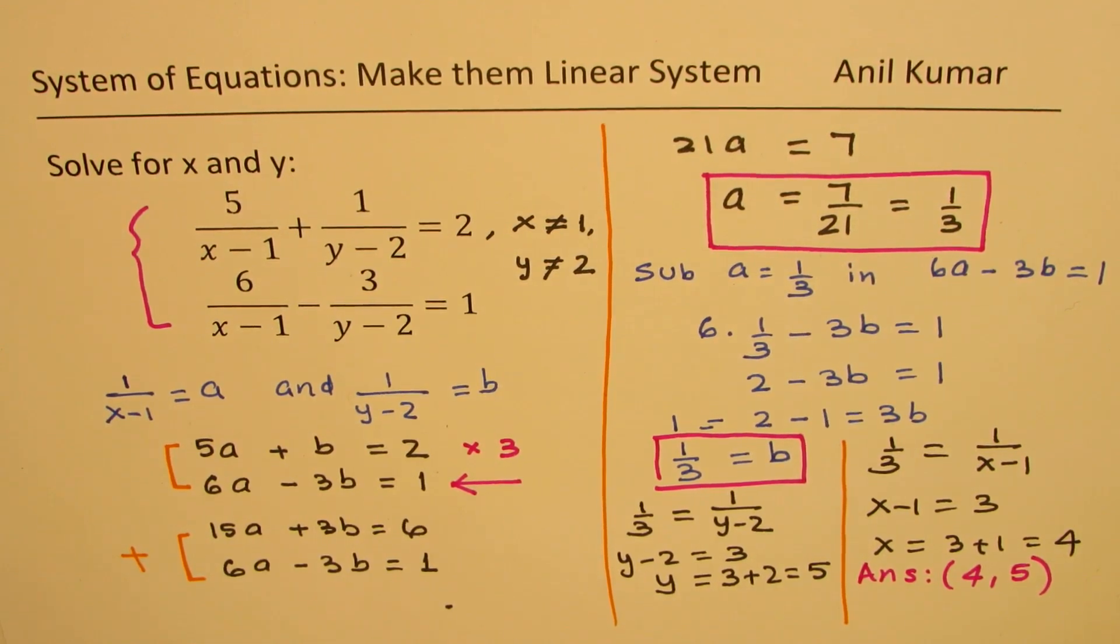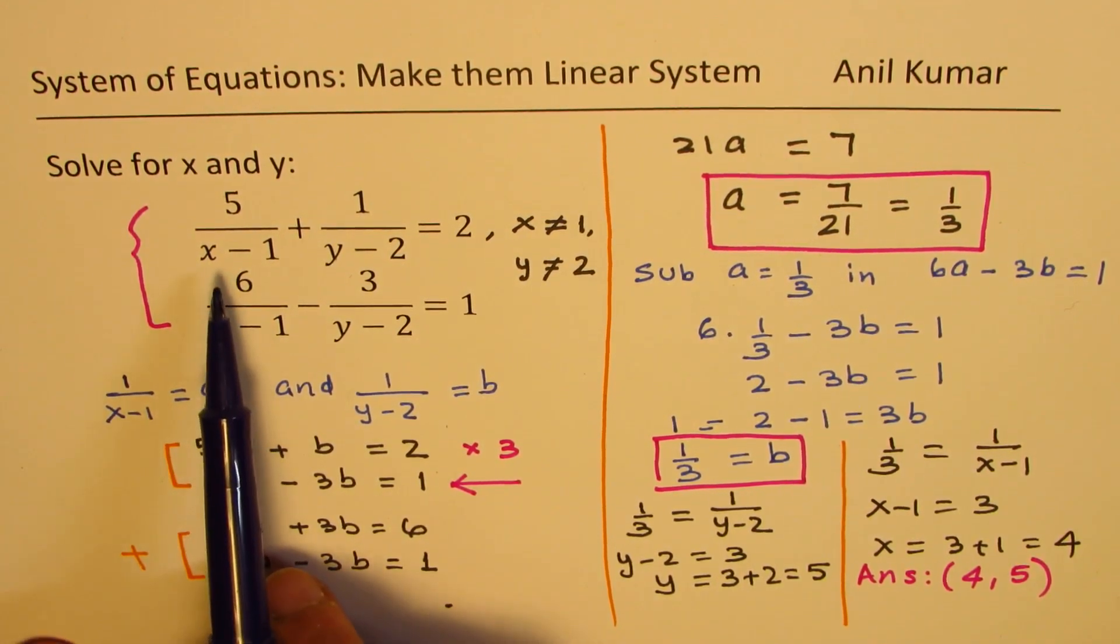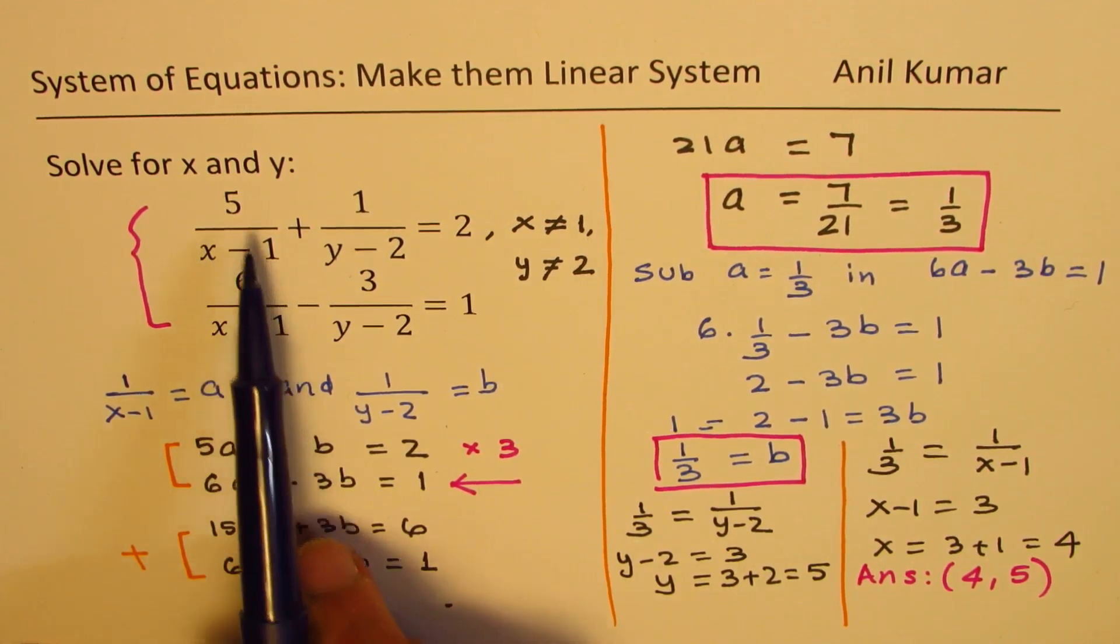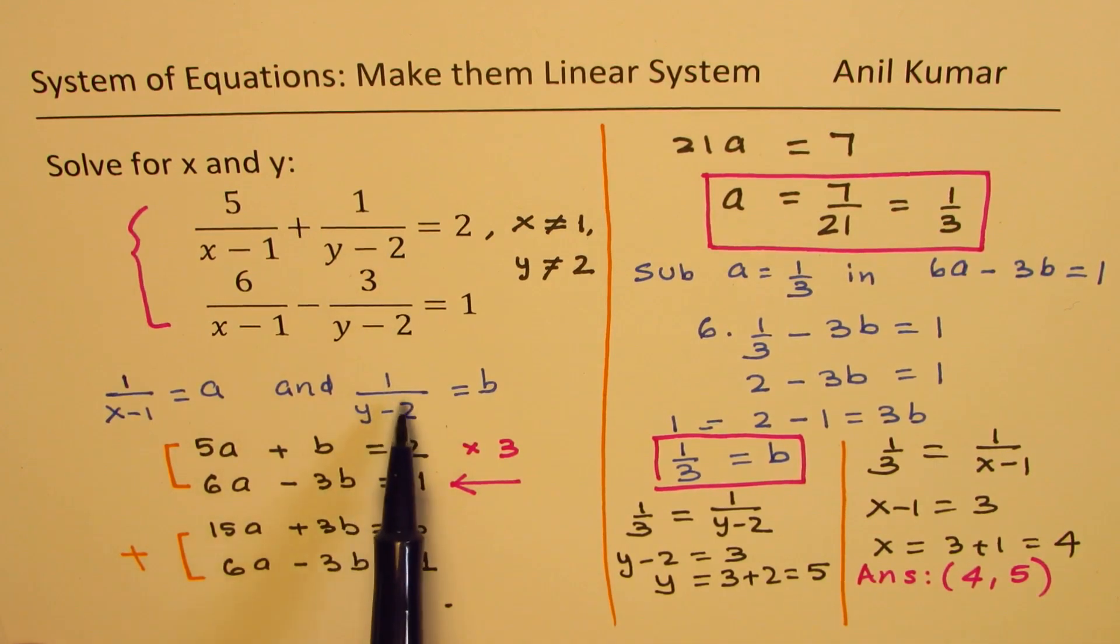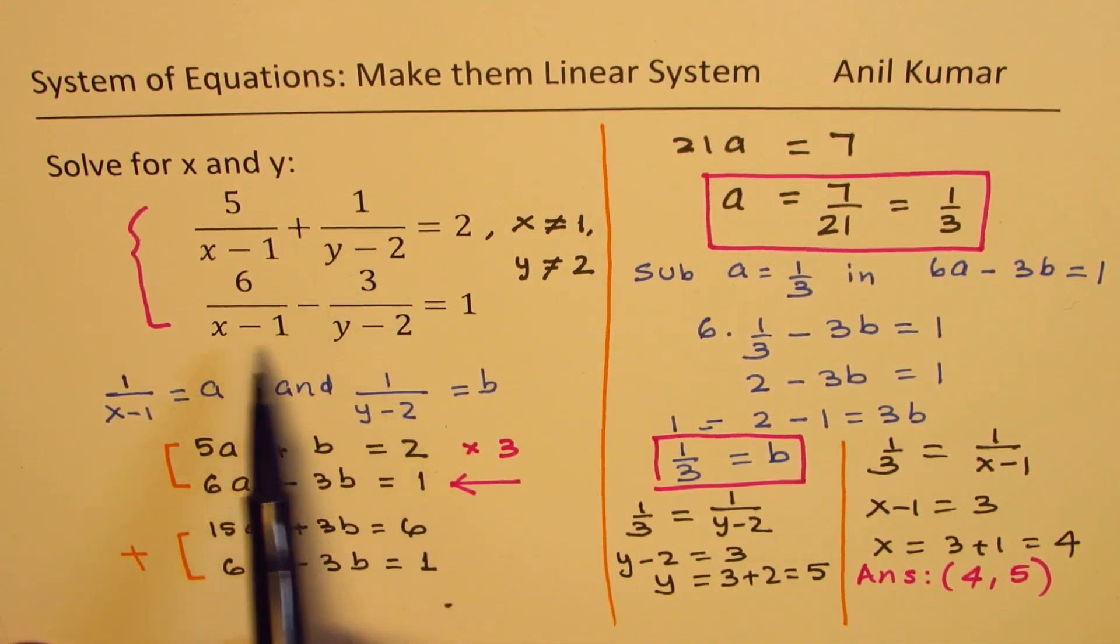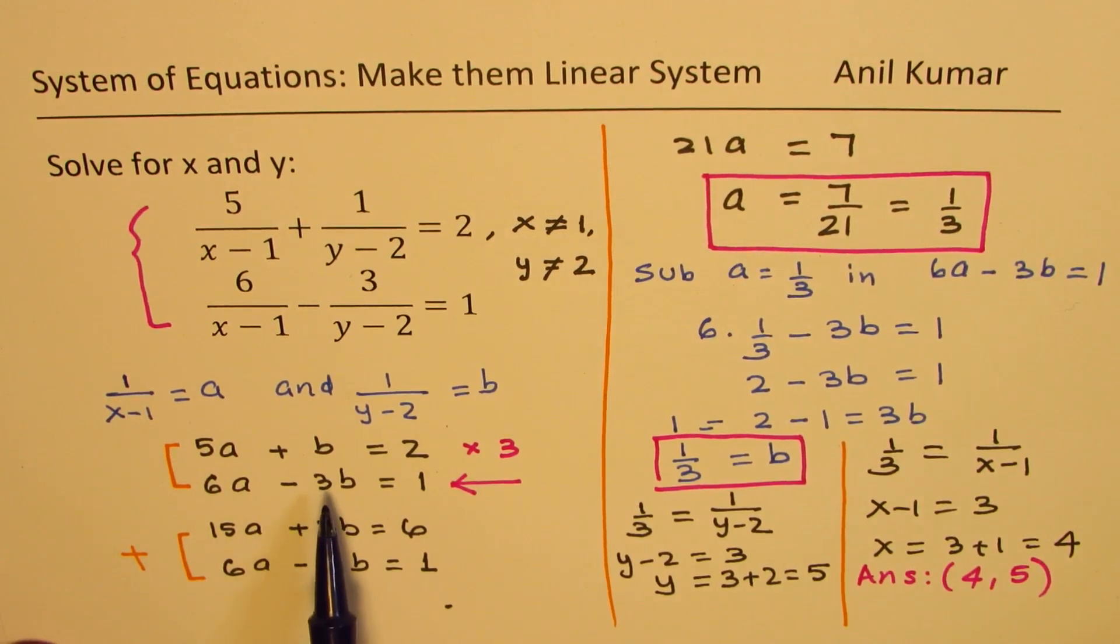So I hope these steps are absolutely clear. Let's summarize these steps. One, we did a substitution of 1 over x minus 1 as a, and 1 over y minus 2 as b, since in both the equations, those were our denominators. So we got a linear set of equations.